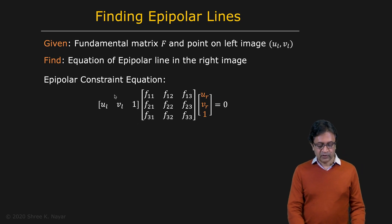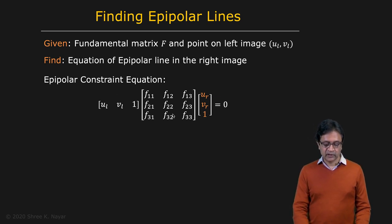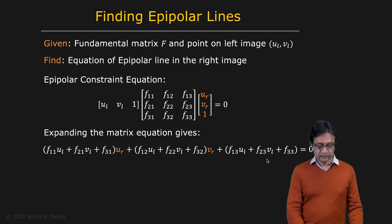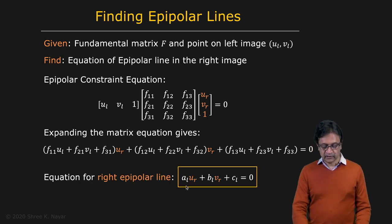So we're back to our epipolar constraint, which is this right here. In this particular case, we know UL and we know F and we want to find an expression for UR. So if you write this out, you get this expression right here. And you can simplify that to get the straight line equation right here.